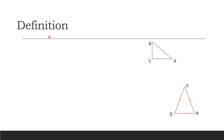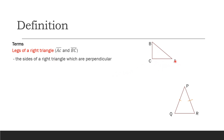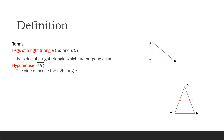Now let's have some definitions of terms. The legs of a right triangle: if we refer to this triangle, the legs are segment AC and BC. The legs are the sides of the right triangle which are perpendicular. The hypotenuse is segment AB — it is the side opposite to the right angle. This is also the longest side in a right triangle.